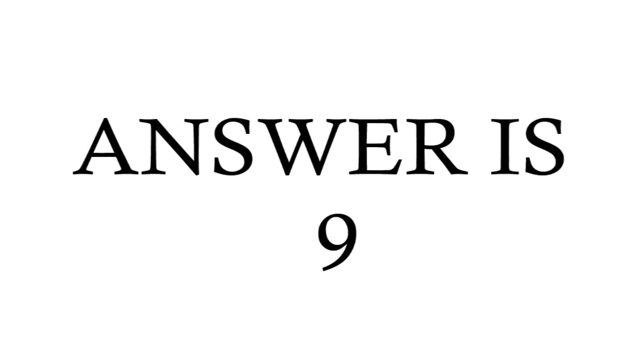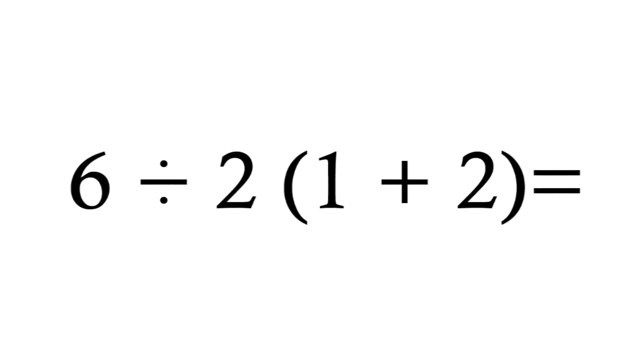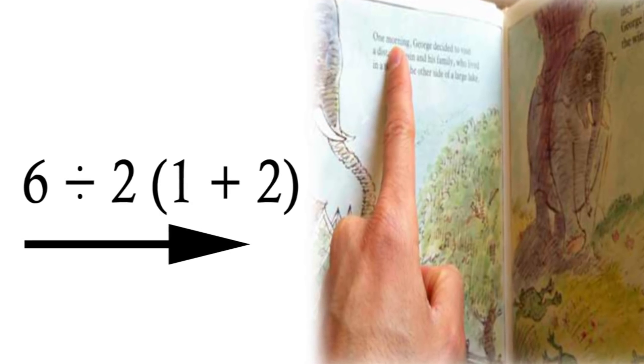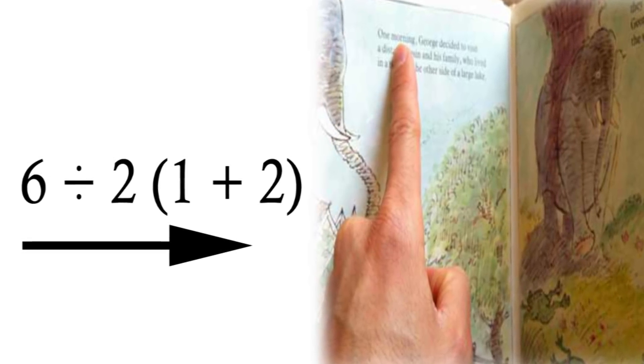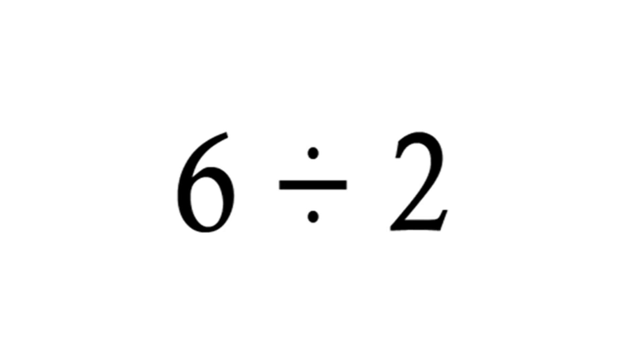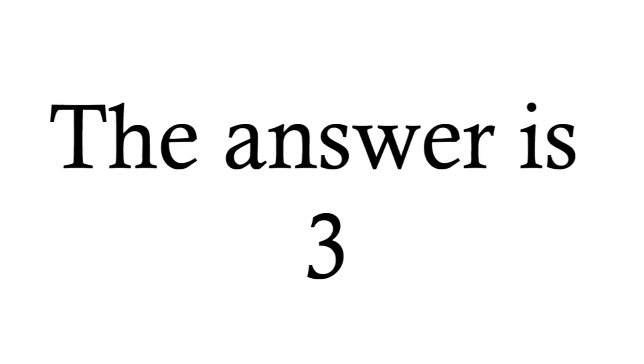The correct answer to this equation is 9. The way that's figured out is simple. Start by looking at the equation. Most people who try to solve this problem go from left to right, the same way that you read the words in a book or on a piece of paper. Start figuring out the first part of the problem, 6 divided by 2. The answer to that question is 3.